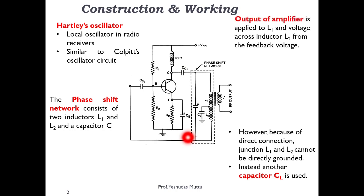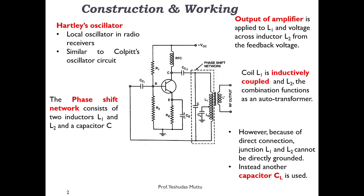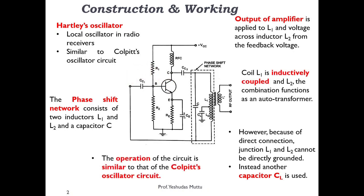The output of this particular amplifier is given to the tank circuit, basically to inductor L1. The output appears across L1, and L2 is connected back to the base of the transistor via capacitor CC1. The operation of this circuit is similar to that of Colpitt's oscillator.